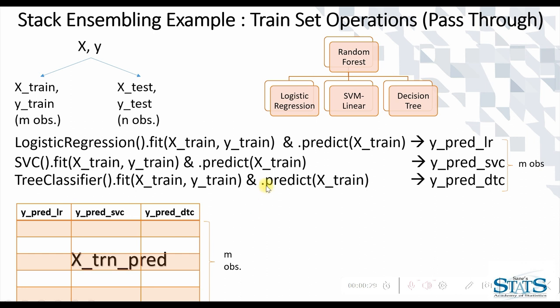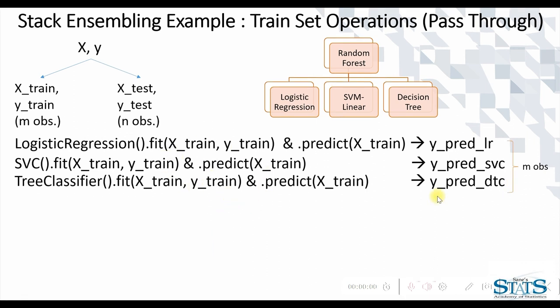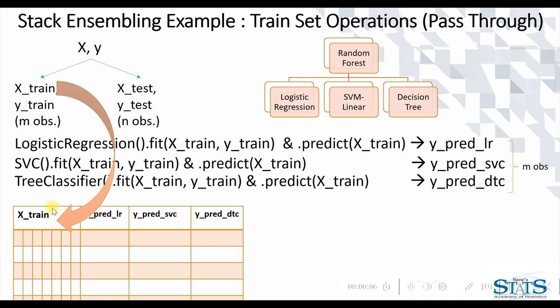Now the change over here can be that instead of only including the predicted columns, we include the original features also. So whatever will be the original features, say suppose the original features are p features, now our xtrn_pred will compose of not just three columns but p plus three columns.